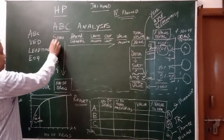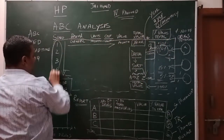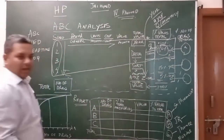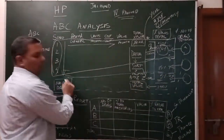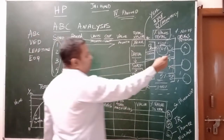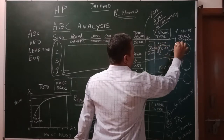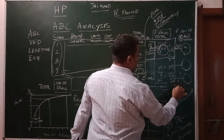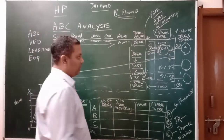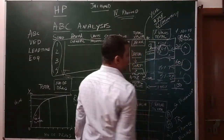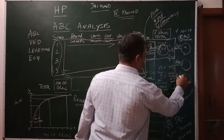The number of drugs contributing to each value threshold is identified. 80% of the total value comes from approximately 20% of drugs. 15% of the value comes from 60% of drugs. 5% of the value comes from the remaining 20% of drugs. So drugs are counted and assigned to A, B, or C class based on their value contribution.